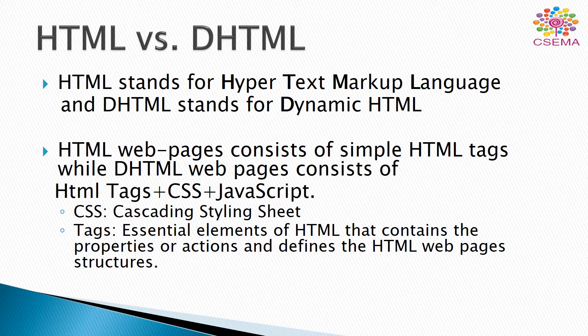HTML web pages consist of simple HTML tags, while DHTML web pages consist of HTML tags, CSS, and JavaScript. CSS, or cascading style sheets, provides more styling and an attractive look to web pages.